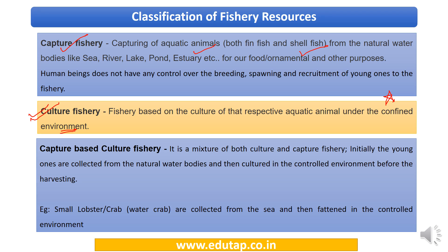A third type is capture-based culture fishery — a combination of both. You collect fish or other aquatic resources from natural water bodies, then culture them in a controlled environment before harvesting. A common example is crabs and lobsters: collected from the sea and then fattened in a controlled environment with calculated feed to increase their weight and market value.